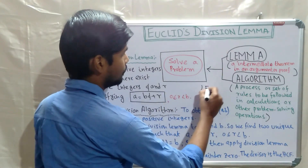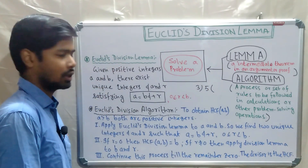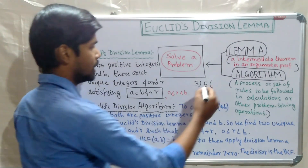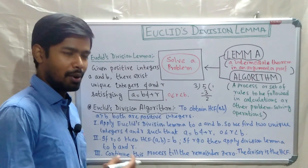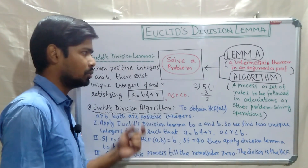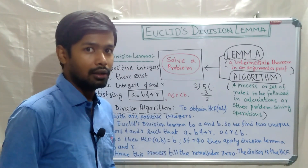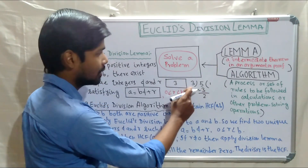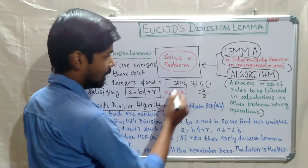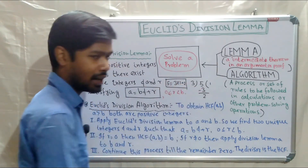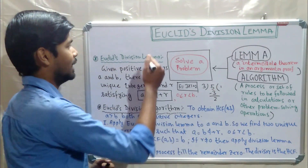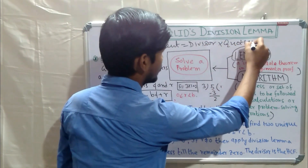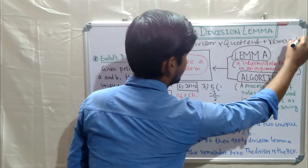Suppose we are dividing 5 by 3. From your third standard experience, 3 ones are 3 and we get 2 as remainder. Your teachers may have asked you to verify: divisor × quotient + remainder = dividend, which gives us 5. That is exactly Euclid's division lemma: dividend = divisor × quotient + remainder.